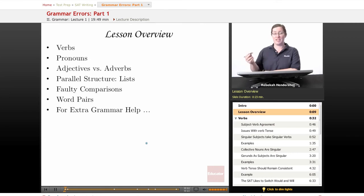We're going to begin with a brief lesson overview. We're going to talk about common errors associated with verbs, with pronouns, with confusing adjectives and adverbs. We're going to talk about parallel structure as it applies to lists, faulty comparisons, and word pairs. And finally, we're going to talk about a couple of places you can go for extra grammar help beyond this course.